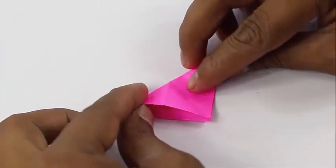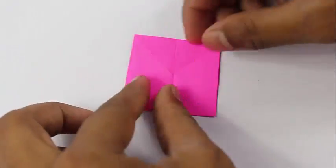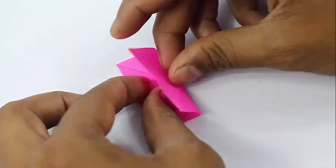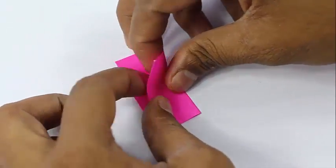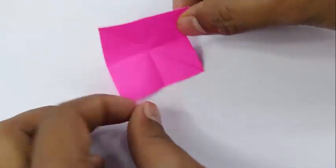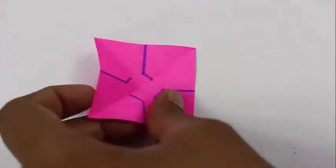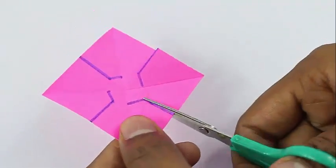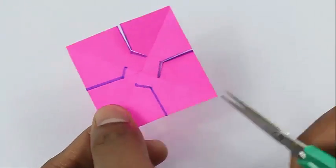Take a 5 cm square and fold both the diagonals and the midlines. Then draw the blue lines and cut them with scissors for making the fan blades.